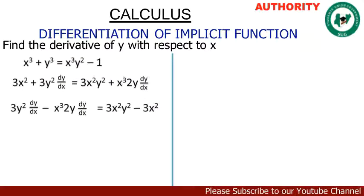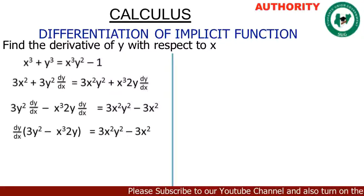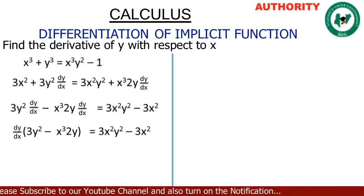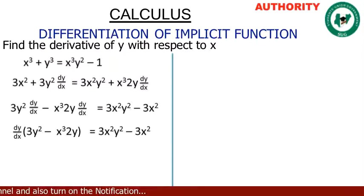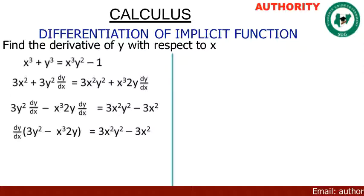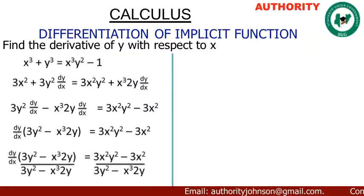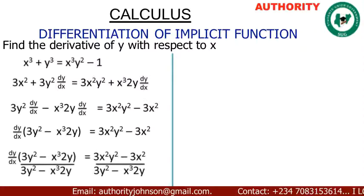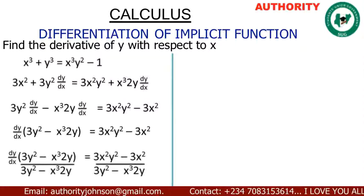Now let's factor out dy/dx. We have dy/dx(3y² - s³ · 2y) = 3s²y² - 3s². To isolate dy/dx, we divide both sides by (3y² - s³ · 2y), giving dy/dx · (3y² - s³ · 2y) divided by (3y² - s³ · 2y).